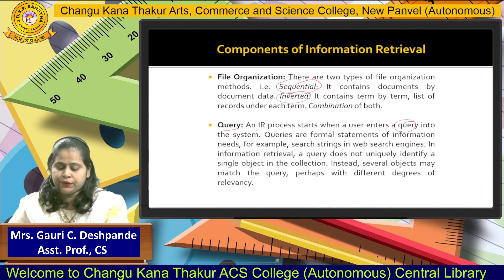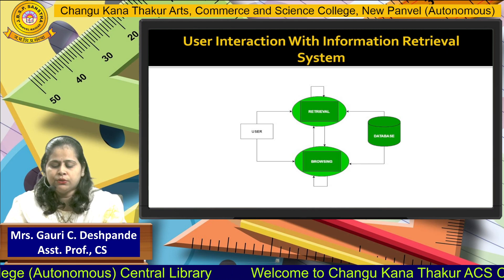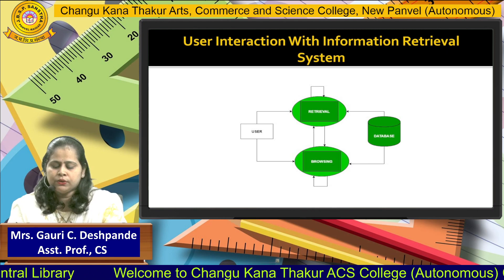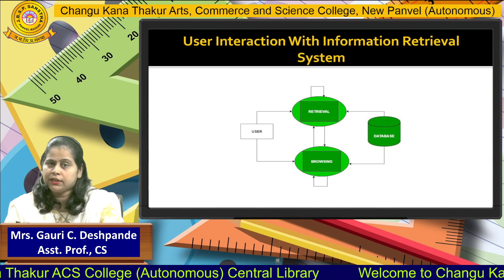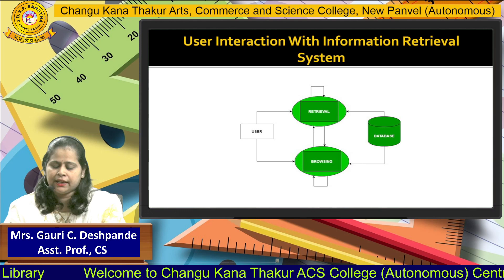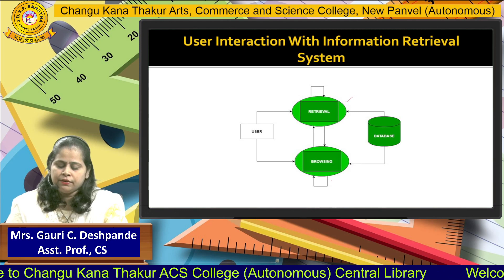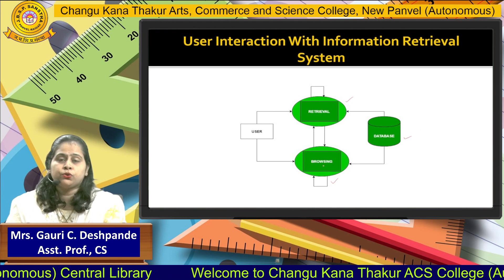The next topic is the user, which is the second component. How does a user interact with your information system? We need a database or storage from which we can retrieve or store data. The user is connected to three entities: the retrieval system, the browser, and the database.